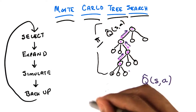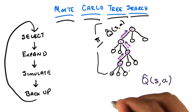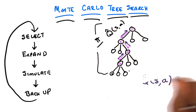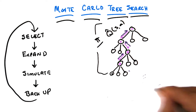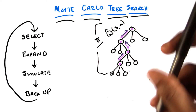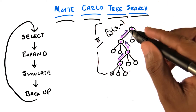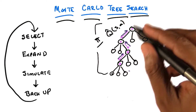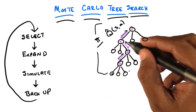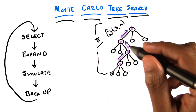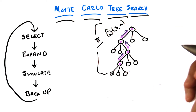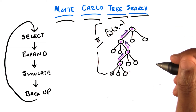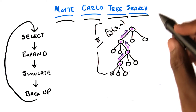So I just keep doing this over and over again. And what this gives me is an ever-expanding tree where I feel more and more comfortable about my Q values and therefore more and more comfortable about the policy that I should take. And it seems like it's getting more accurate over time.